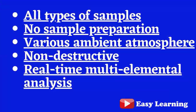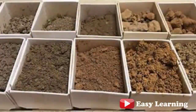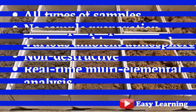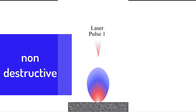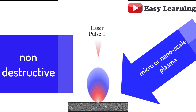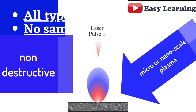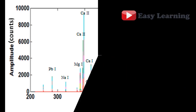There is no need to prepare a sample before the experiment. It can be applied to different ambient temperatures and atmospheres. This technique is known as a non-destructive technique as it damages on a tiny scale, almost micro or nano scale. Multiple elements can be analyzed in a real-time experiment either with major or minor concentrations.